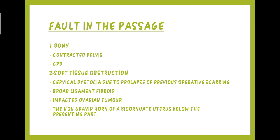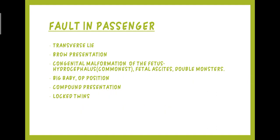Other causes of soft tissue obstruction include impacted ovarian tumour and the non-gravid horn of a bicornuate uterus below the presenting part. Fault in passenger means fault in the fetus, which includes transverse lie, brow presentation, congenital malformation of the fetus like hydrocephalus — which is the most common — fetal ascites, double monster, big baby, occipitoposterior position, compound presentation, or locked twins.